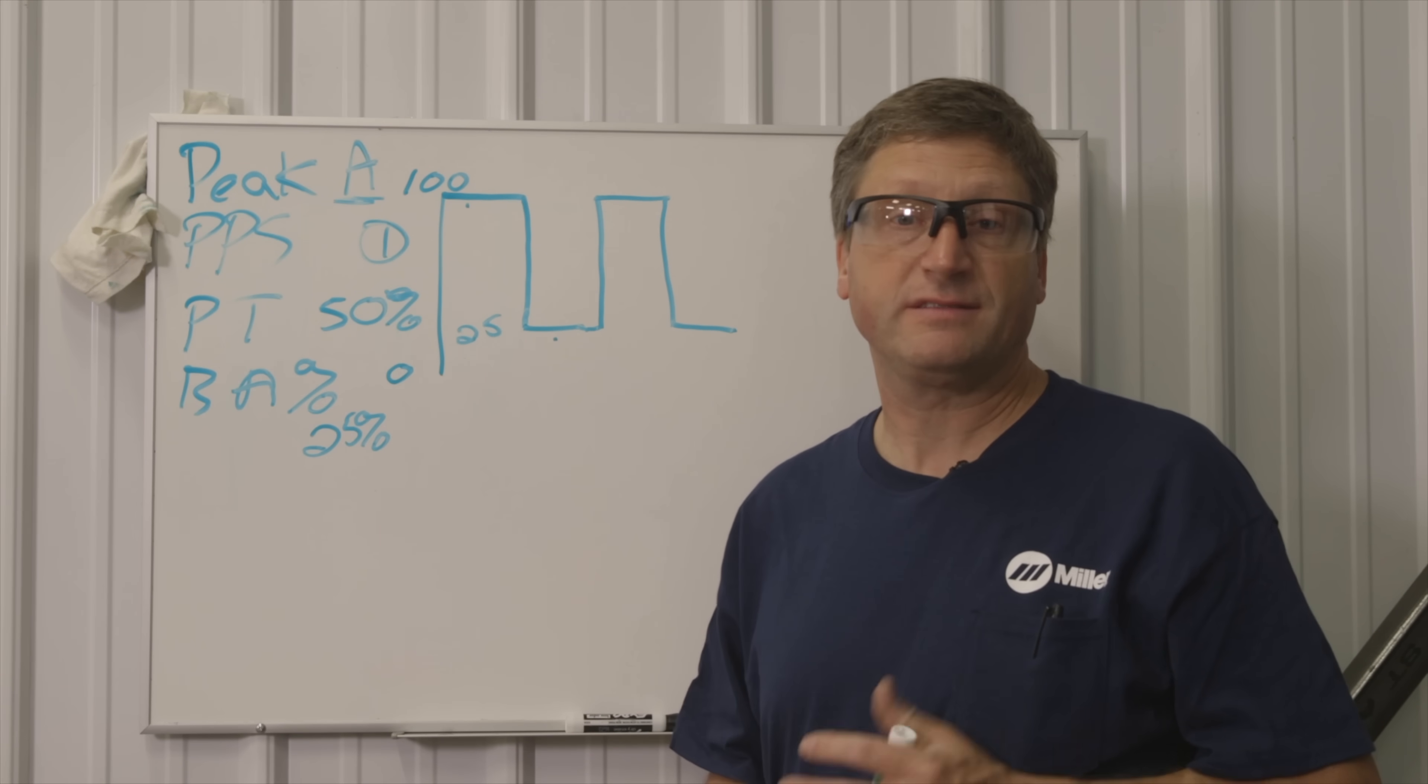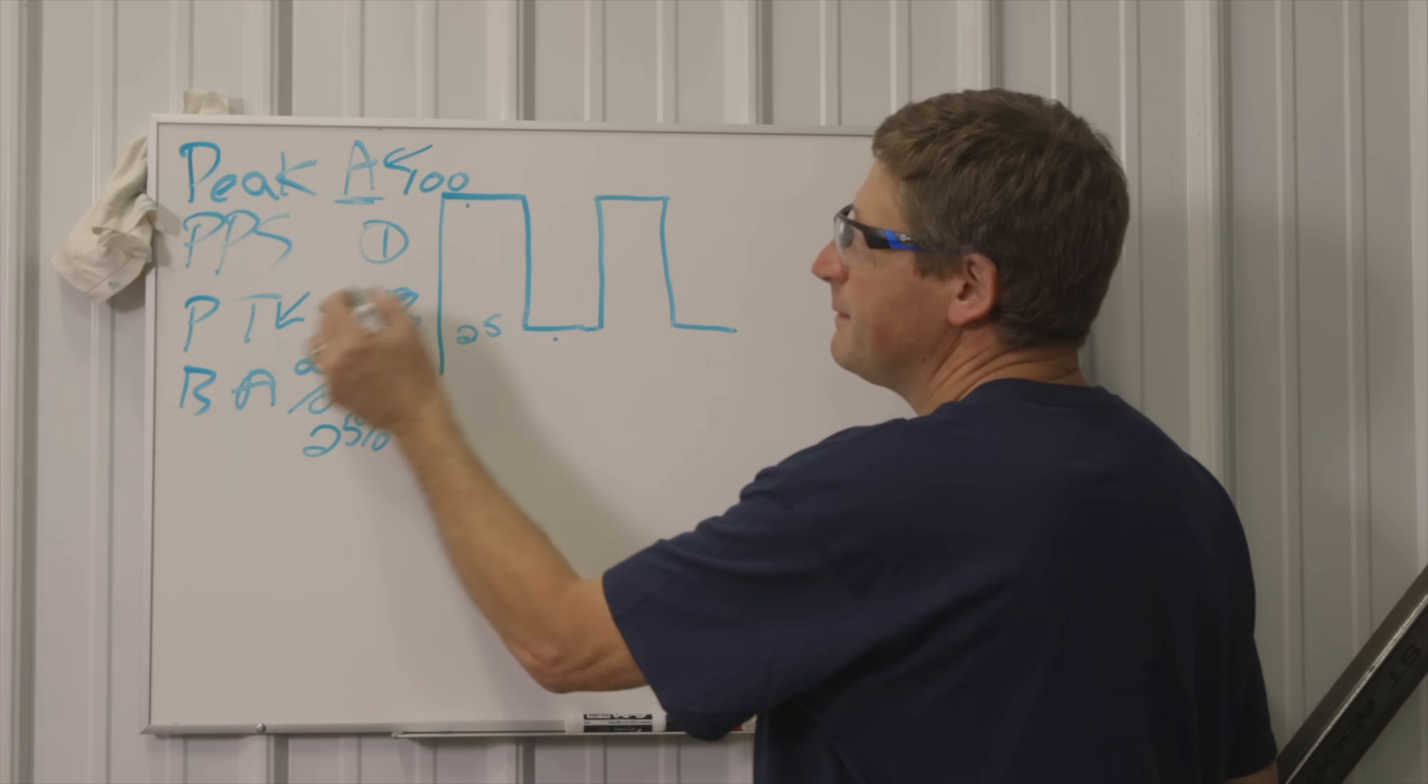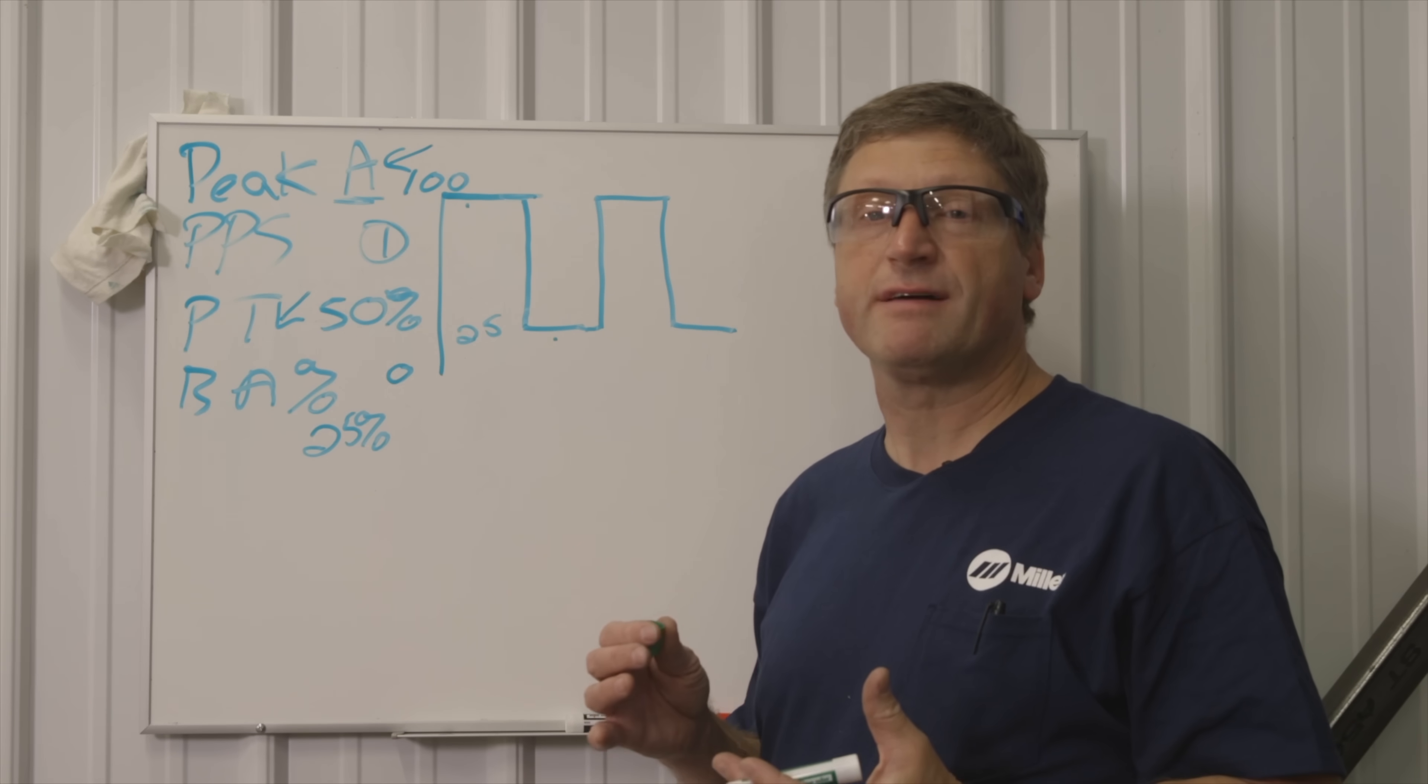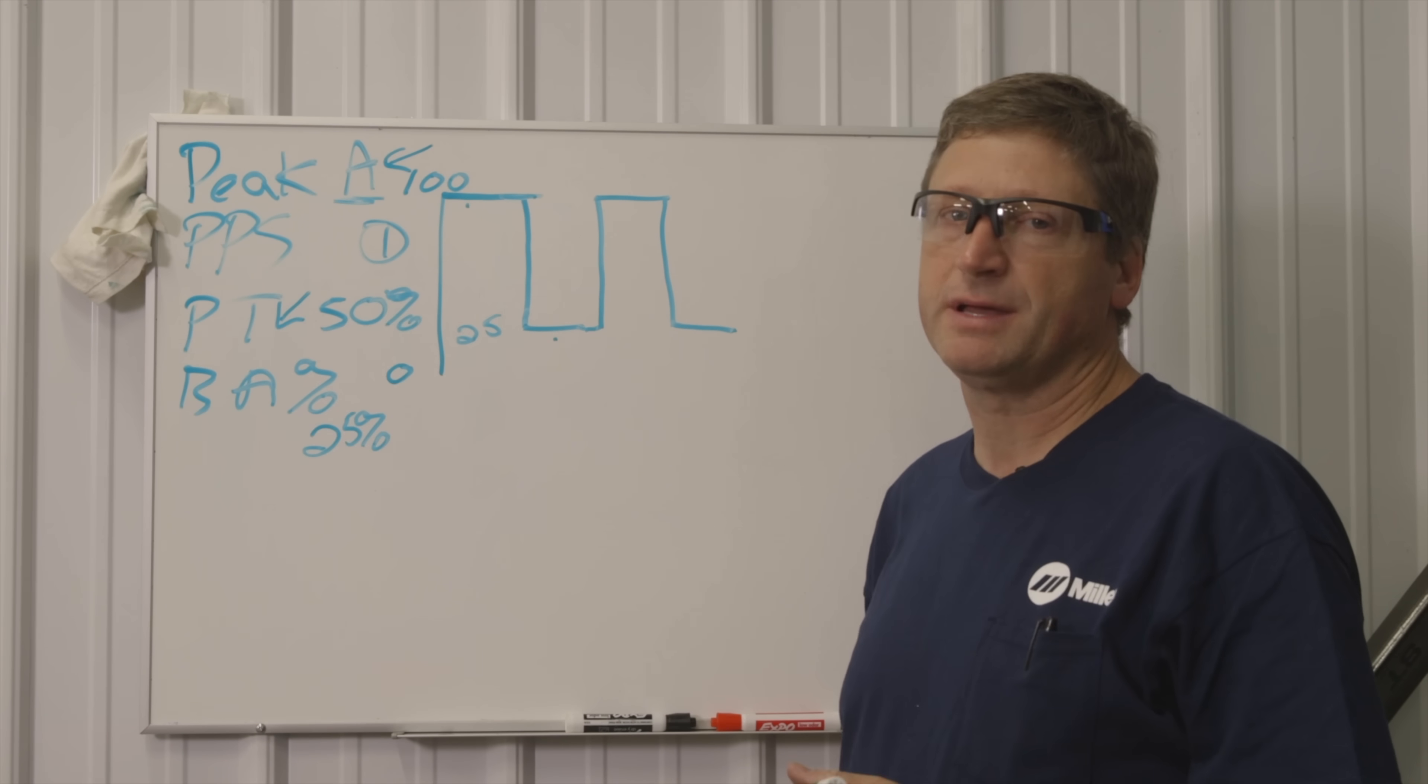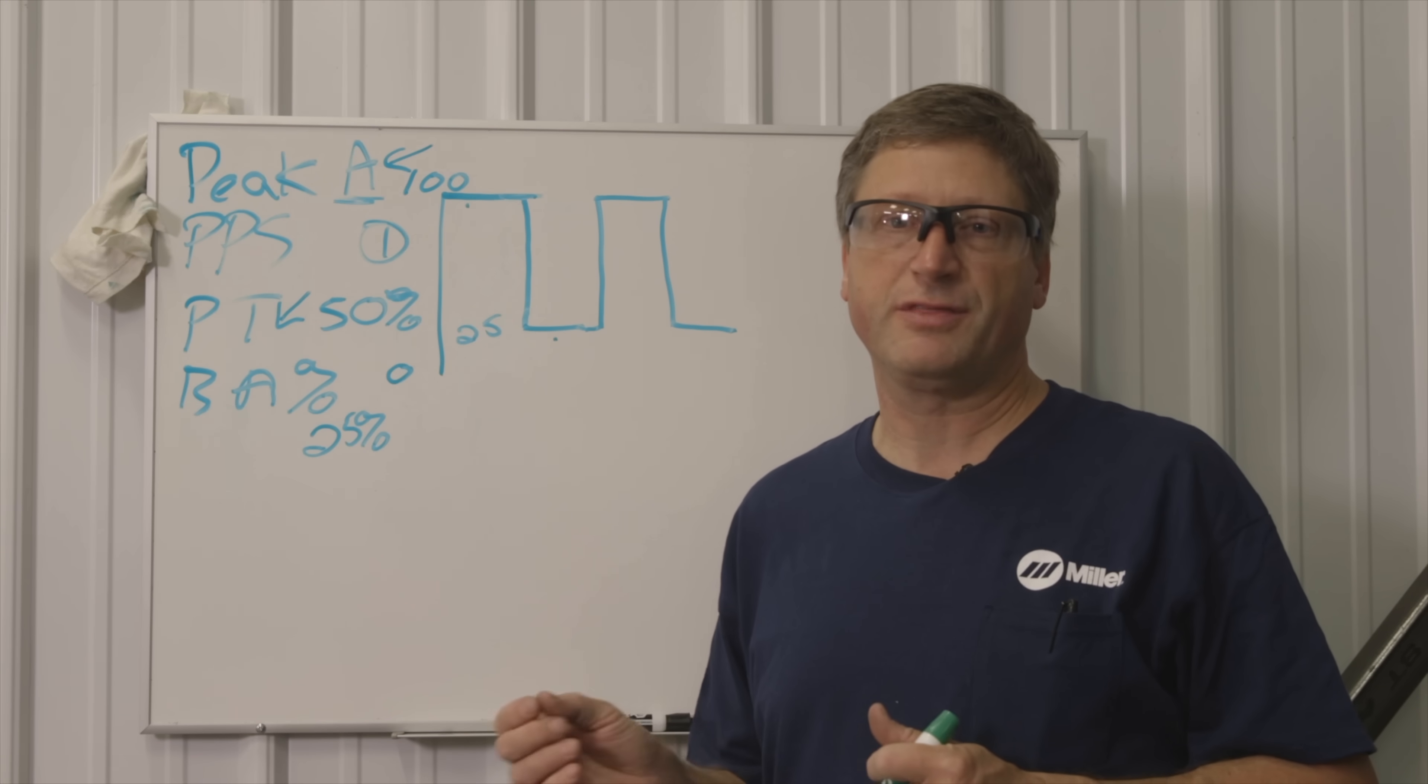In order to weld that same thickness with your pulser on I'm going to have to either increase my peak amperage or increase the time I'm spending at that peak amperage. Those are the two ways you'll be able to get more average energy or amperage to weld with. Increase your peak amperage or increase the peak time. Keep in mind that the advantages of pulse are to reduce the total heat going to the piece which also reduces warpage, especially if you're working on thinner materials.